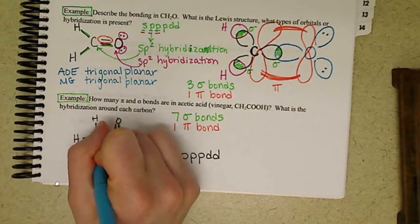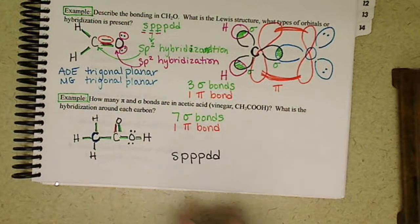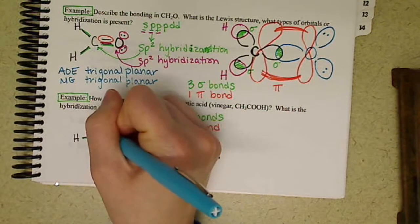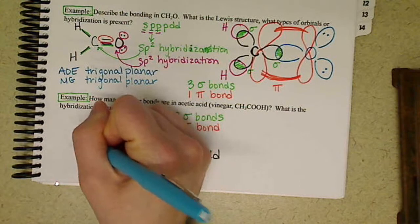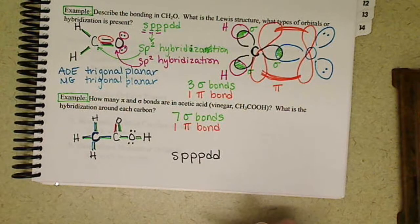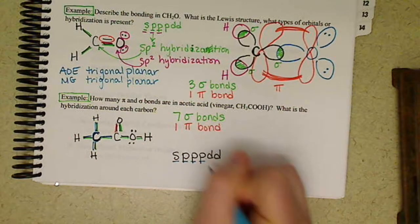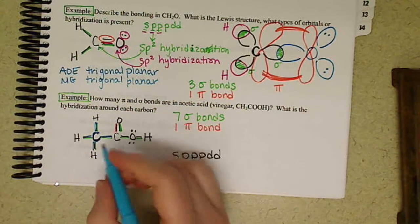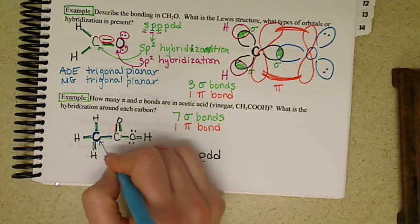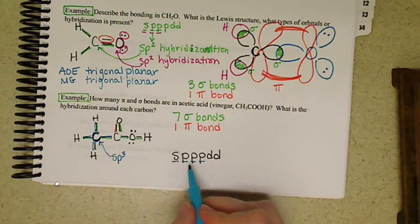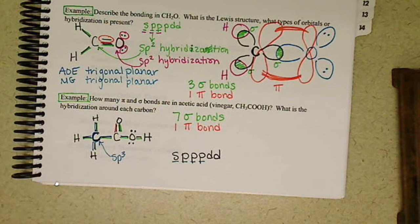Around this carbon here, we'll mark them with blue. We have one, two, three, four areas of electrons, so we need four orbitals. So this carbon here is sp3. We had to underline all three P orbitals.